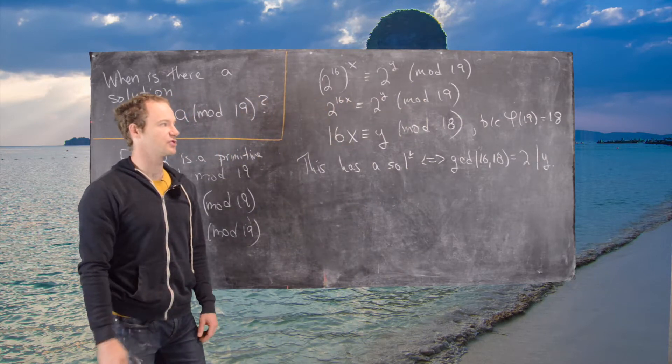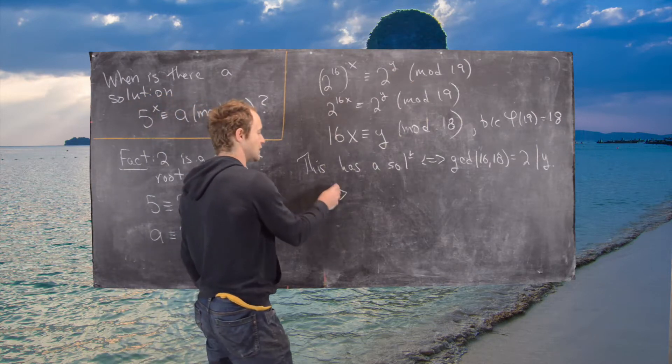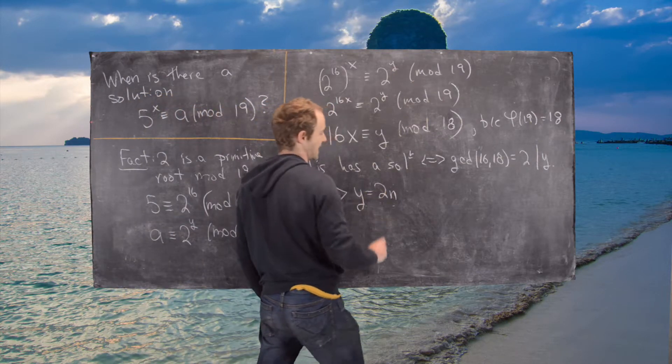So that means this has a solution only when y is even. And so that means we can write y equals 2n.